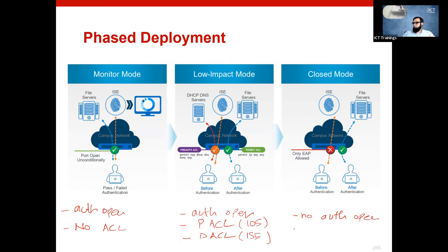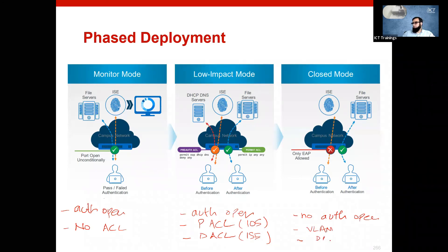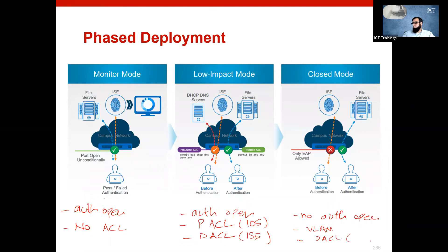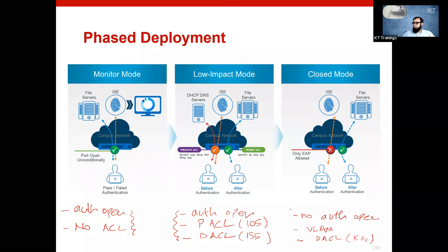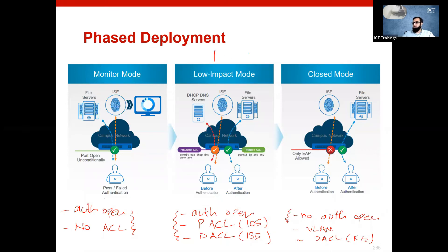Closed mode is equivalent to no auth-open, which means the port only opens once you are authenticated. With closed mode, you can use VLANs or still use downloadable ACL through ISE. You can also push a downloadable ACL through ISE to restrict traffic on the port — you can mix and match. So to summarize: this is the recipe for monitor mode, this is the recipe for low impact mode, and this is the recipe for closed mode Network Admission Control.